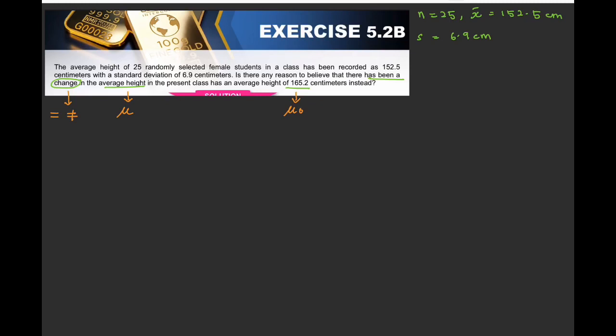So the first step is your H null and H1. So step 1. The symbol is equals and unequal. So equal will be H null. Unequal will be H1. The notation is mu. Equal, unequal. The values is 165.2, 165.2. So then step number 1. Okay.